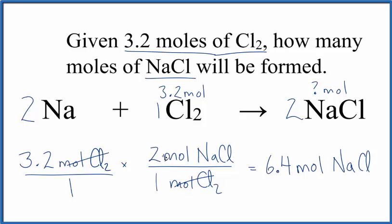3.2 times 2 divided by 1, 6.4 moles of NaCl. And that's what you would have gotten for the earlier process as well. This is probably a good way to learn to do it, but the other way is quick. Nice way to check your work.